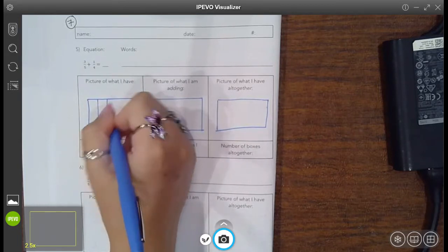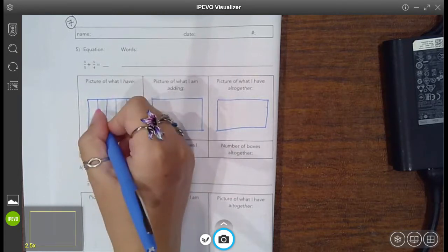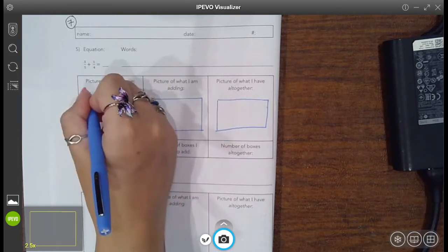Right, so first of all, let's look at the denominator here, and it tells us that we want to break it into how many pieces? Five pieces. So break it into five equal pieces. One, two, three, four, five.